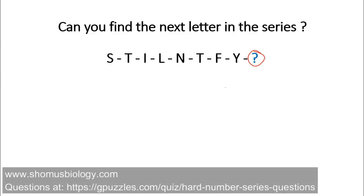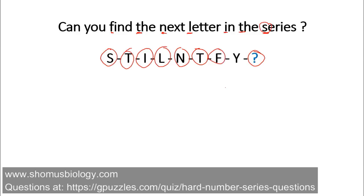Time's up. The key idea is: can you find the next letter in the series by reading the sentence itself? The series starts with S from 'series', T from 'this', I from 'in', L from 'letter', N from 'next', T from 'the', F from 'find', U from 'you' — and then C from 'can'. So the upcoming alphabet will be C. This problem requires no conventional thinking — you need to think really out of the box.